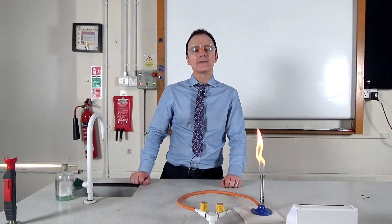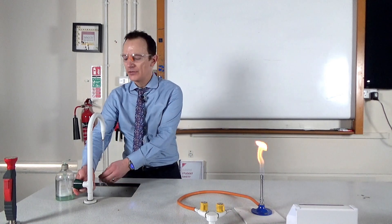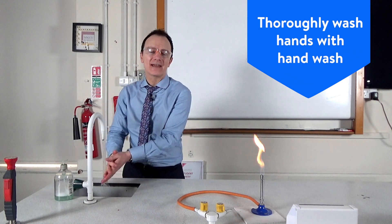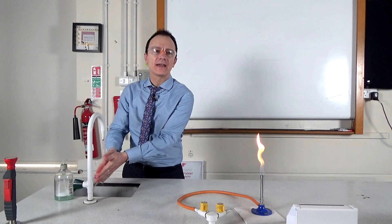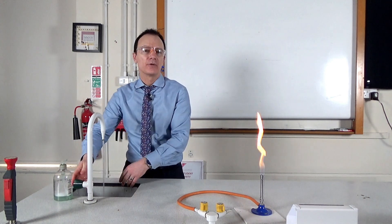Your students would then light a Bunsen burner and leave it on the safety flame. It's very important that they thoroughly wash their hands with hand wash, not hand sanitizer, because that might contain alcohol and that would present a fire hazard with the flame of the Bunsen burner.